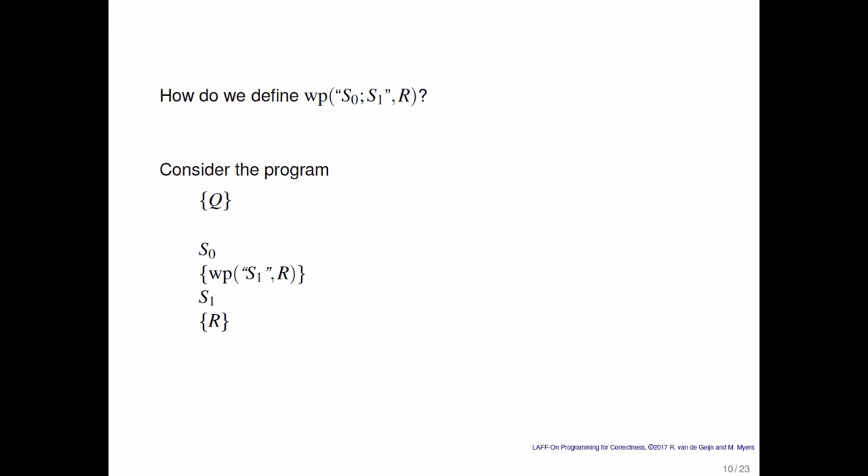S0 has to leave you in a state where that weakest precondition is true. So what does that mean? Well, that means that before S0 is executed, the weakest precondition of S0 leaving you in a state where the weakest precondition of S1 is leaving you in a state where R must be true.